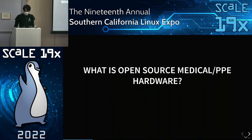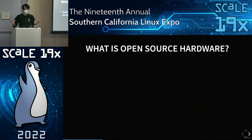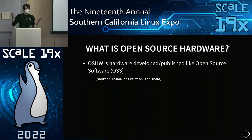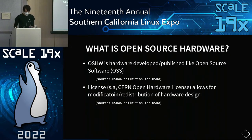What is open source medical hardware for PPEs? Quite simply, it's medical devices or personal protective equipment developed as open source hardware. According to the Open Source Hardware Association definition, open source hardware is a hardware project that is developed and published as if it were open source software. That's the very basic definition.